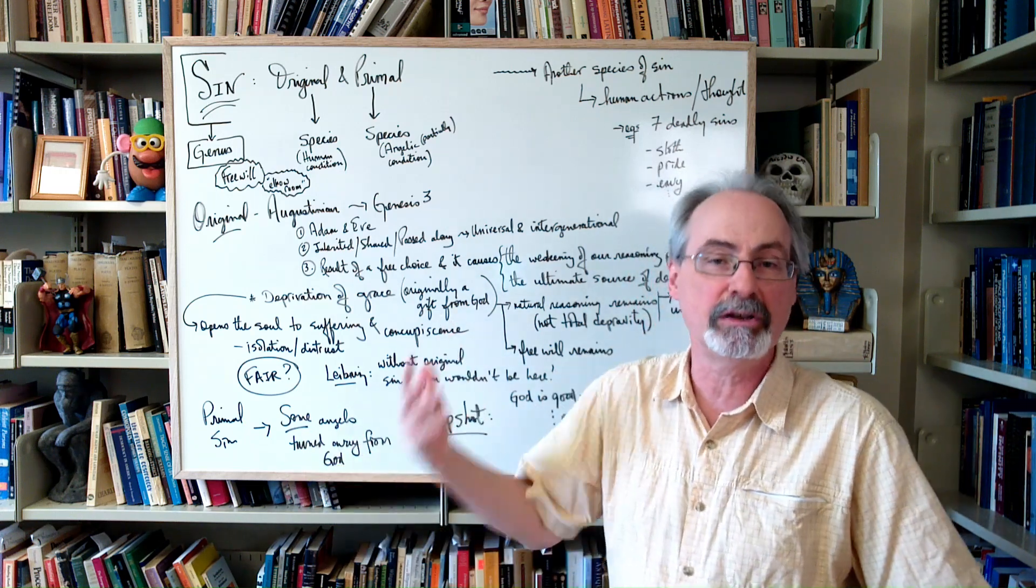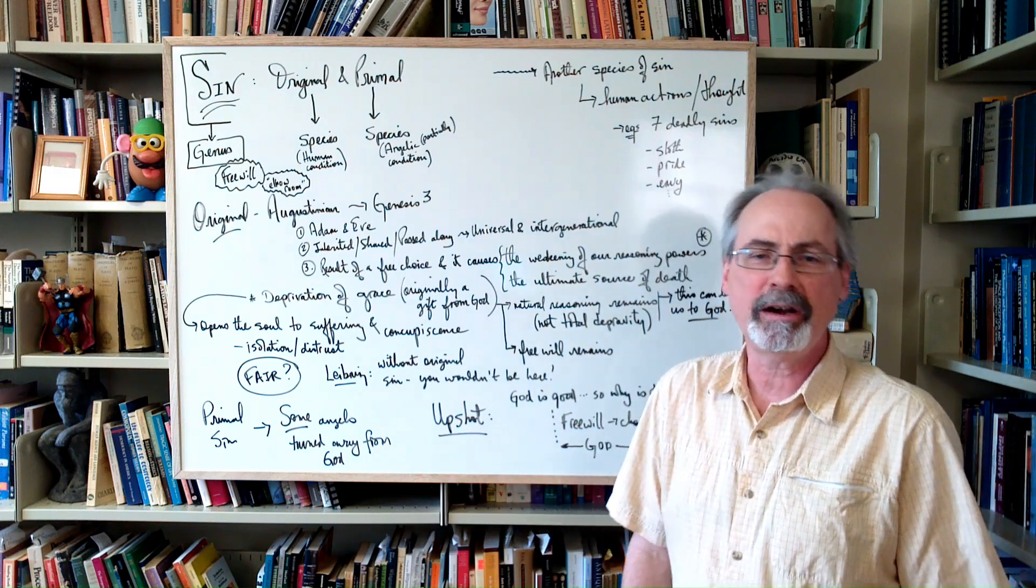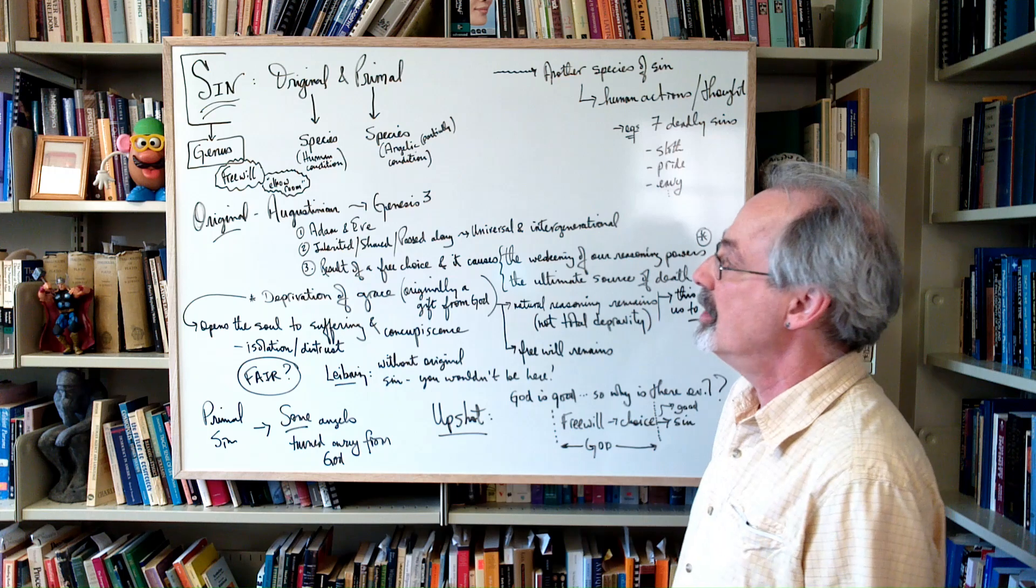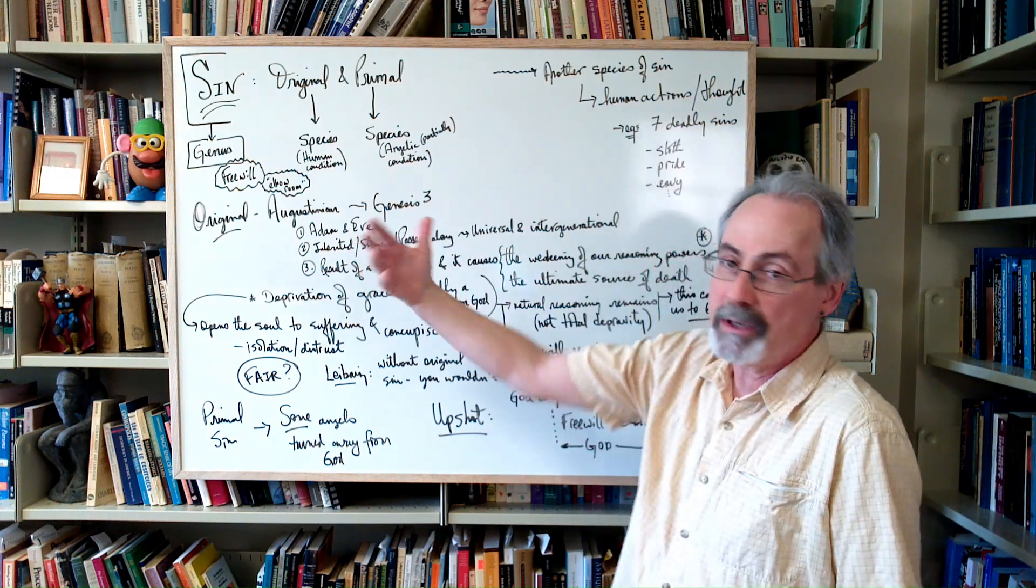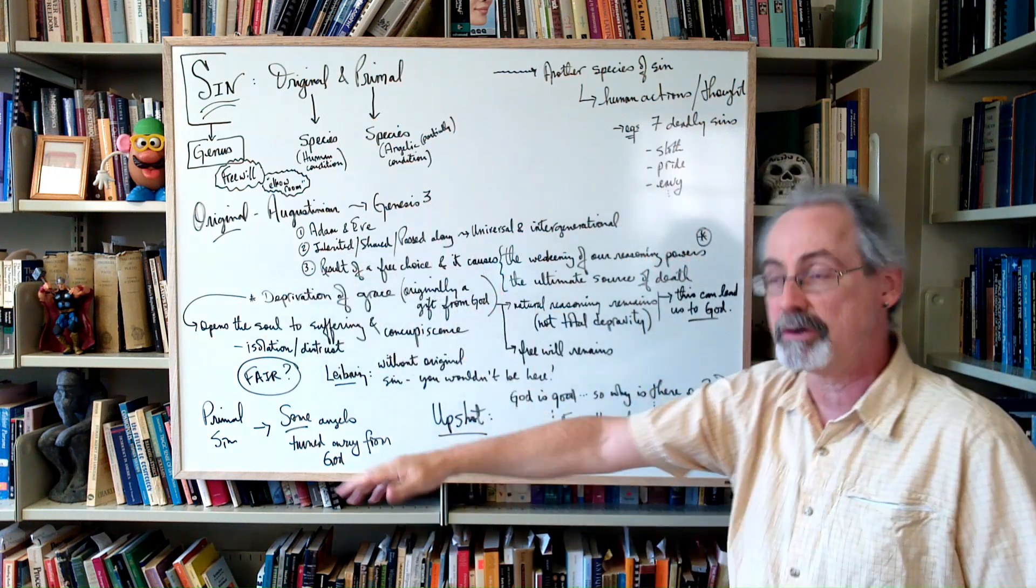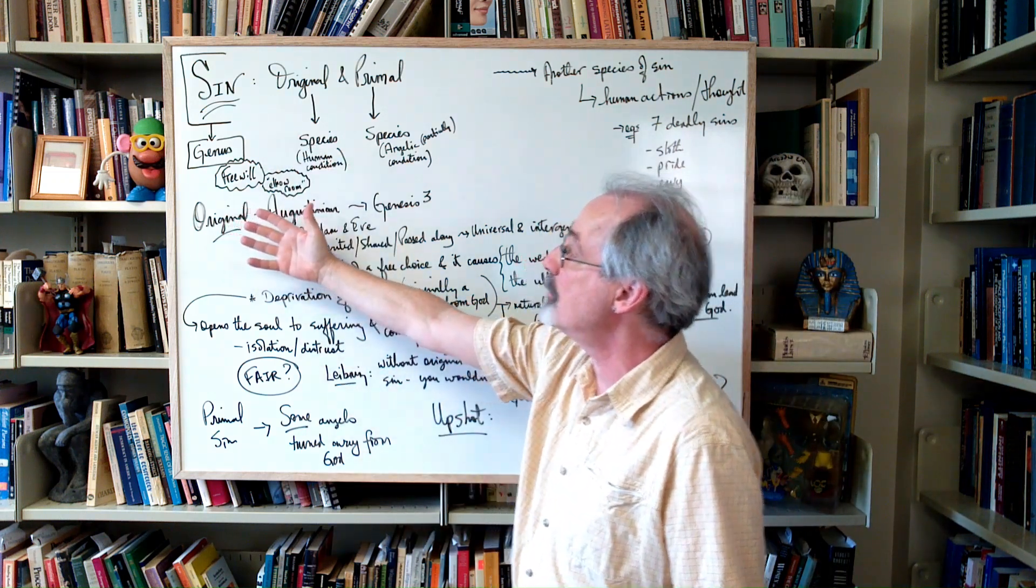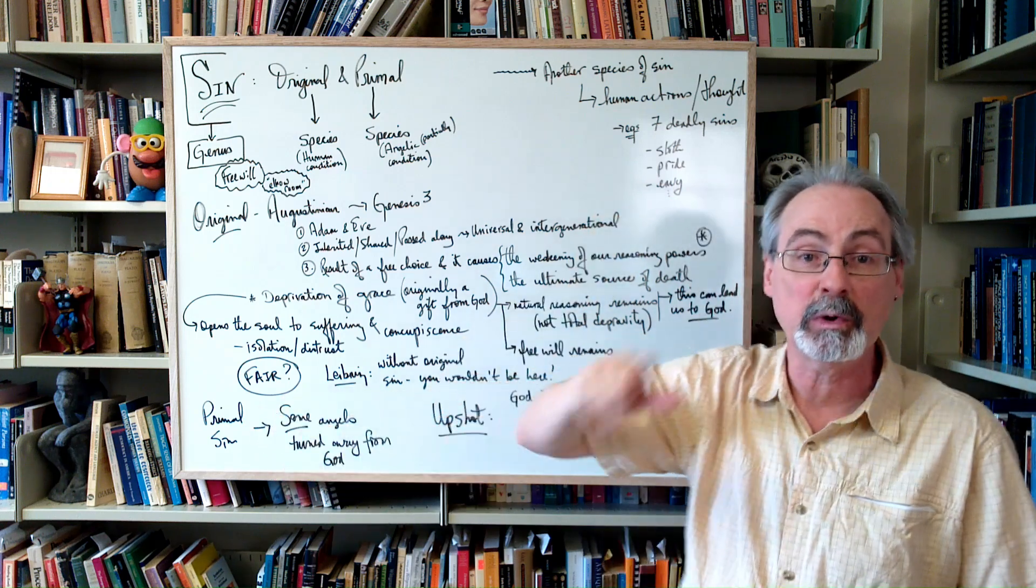You wouldn't say the ball made a free choice, even though sometimes we tend to talk like that - like my car decided not to start today. Well, the car doesn't have free will, at least last time I checked. So sin, I'm looking at it in a philosophical theological perspective, has a genus concept needing free will because you're trying to use it to get evil into the world.